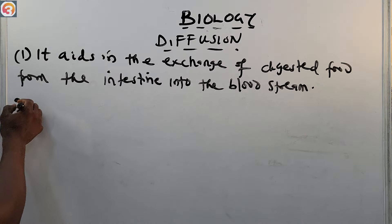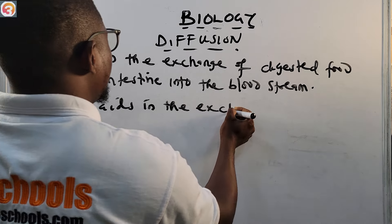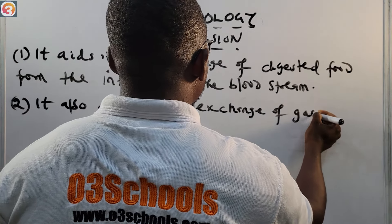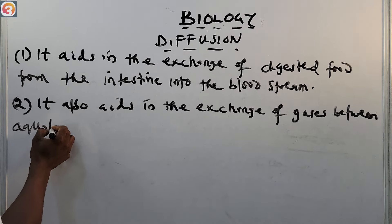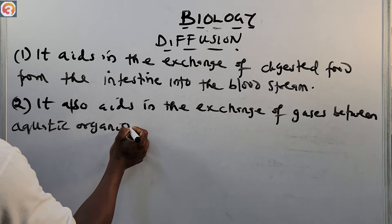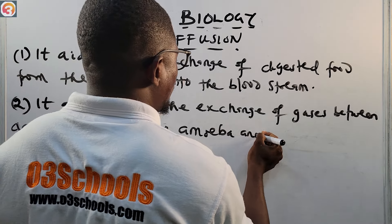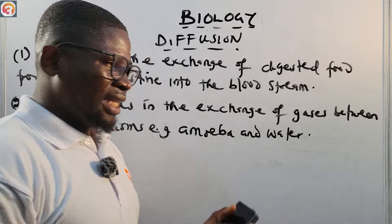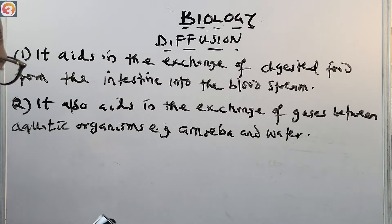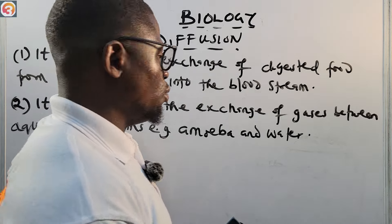Number two: diffusion also aids in the exchange of gases between aquatic organisms and their water environment — for example, amoeba. So, just like amoeba and water, diffusion helps in the exchange of gases between aquatic organisms and water.